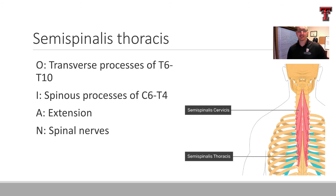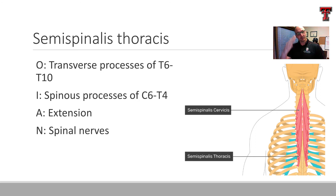Last one — semispinalis thoracis. This originates on the transverse processes of the lower thoracic vertebrae and inserts into the spinous processes of the lower cervical and upper thoracic vertebrae. This is going to be an extensor, and it utilizes the spinal nerve roots for innervation.